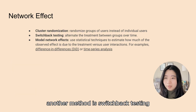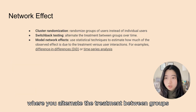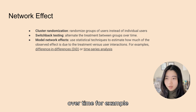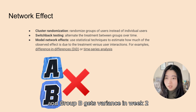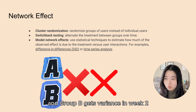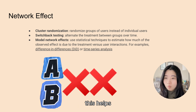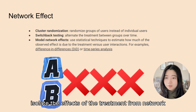Another method is switchback testing, where you alternate the treatment between groups over time. For example, group A gets the variant in week 1 and group B gets the variant in week 2. This helps isolate the effects of the treatment from network effects.